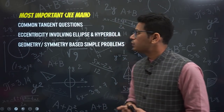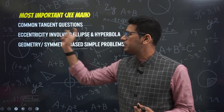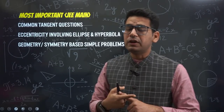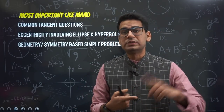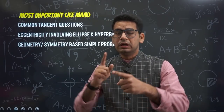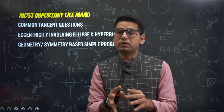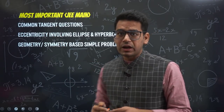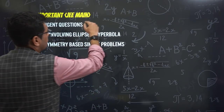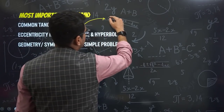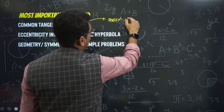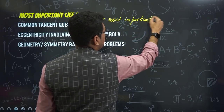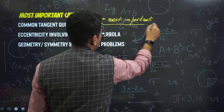Now for the most important topic with regard to JEE Mains — common tangent questions. Once you study the condition of tangency, it can appear in different combinations: ellipse and hyperbola, ellipse and circle, ellipse and parabola, and similarly for hyperbola. All these permutation-combinations of common tangent questions will definitely be practiced. This is actually the most important topic of your entire conic section — not just this chapter, but the most important of entire conics.